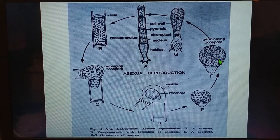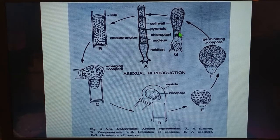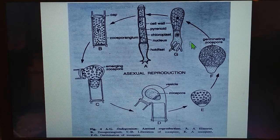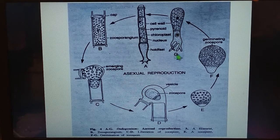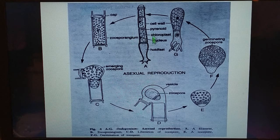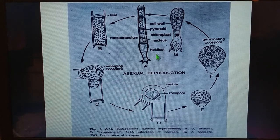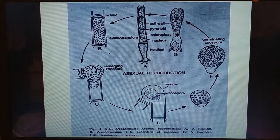After elongation, a transverse septum forms which separates the basal hyaline holdfast from the apical green cell. The green cell then divides repeatedly to form a new filament, giving rise to a new thallus structure — a new organism — as seen in the complete thallus structure of Edogonium.